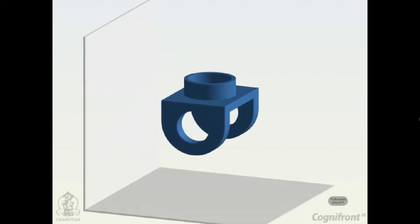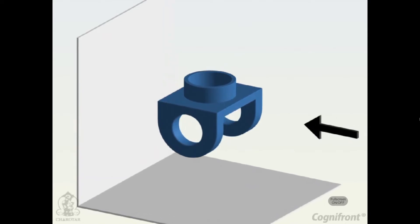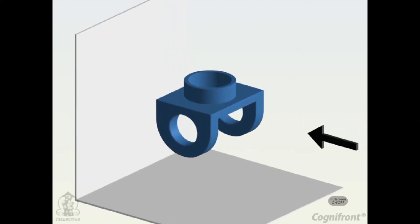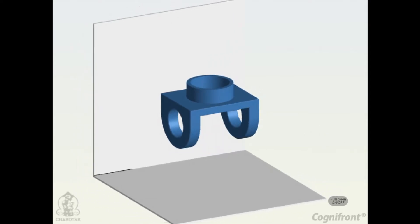My friends, let's now create orthogonal views of this machine bracket as seen in the direction of the arrow. So, draw a horizontal reference line x, y.